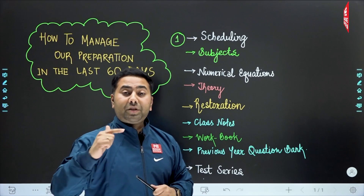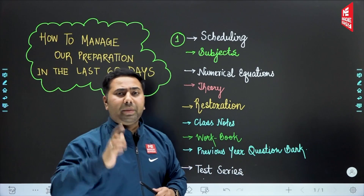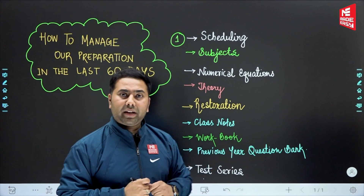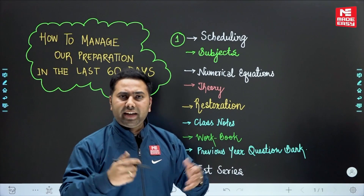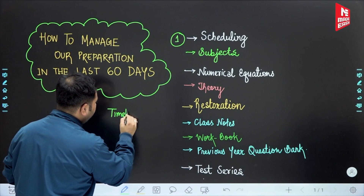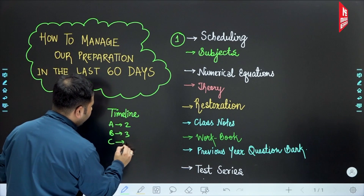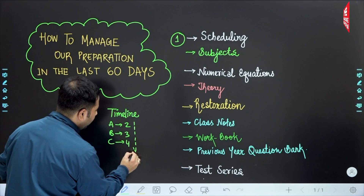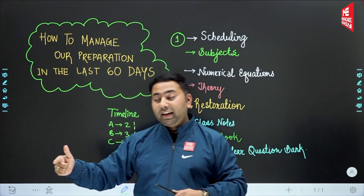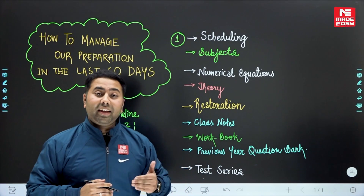These are all our subjects — A, B, C, D, E, F, G, H, I. First of all, I have to decide which subject is very important, which I have to gain confidence from, and then I have to assign it, let's say, three days. Subject A gets 2 days, subject B gets 3 days, subject C gets 4 days. This way I have to assign days to each subject.